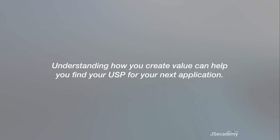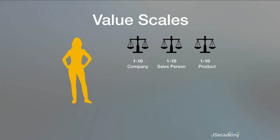Understanding how you create value can help you find your USP. For Uber, a car shows up. I call this concept the 'value scales' — these are scales that exist inside your customer's mind. When a customer is deciding between Uber and Lyft, they go through these value scales. They evaluate: do I trust the company, rating it 1 to 10? Do I trust the salesperson — in this case, the app download page or marketing material? And do I trust the product — will the car actually show up?